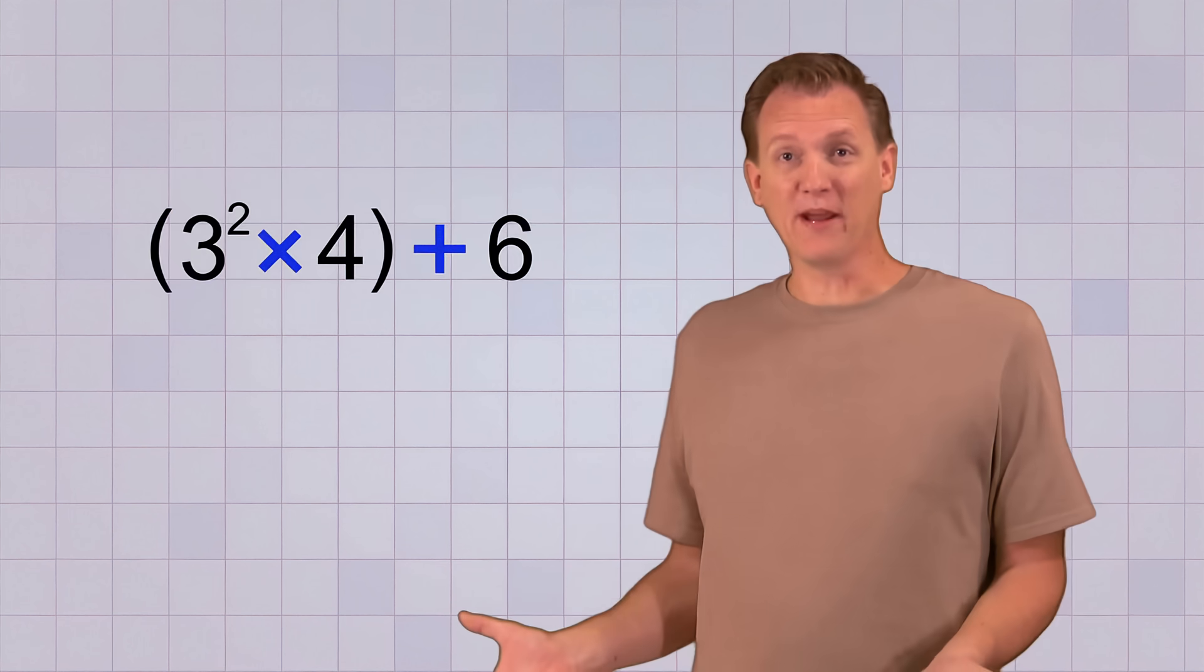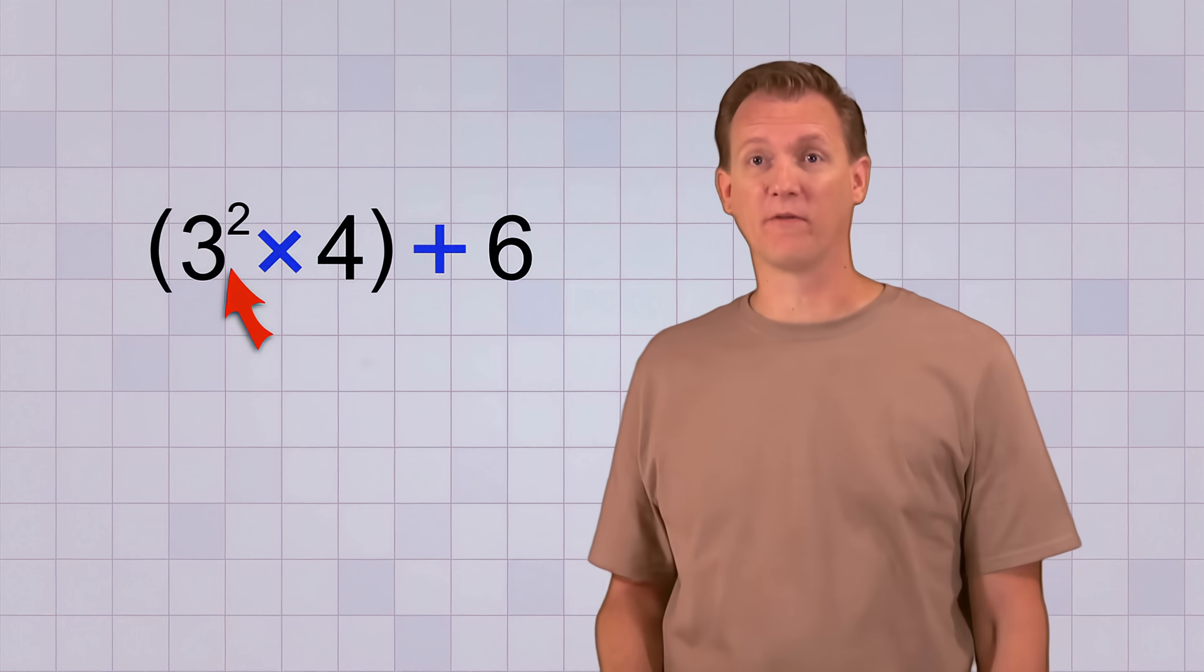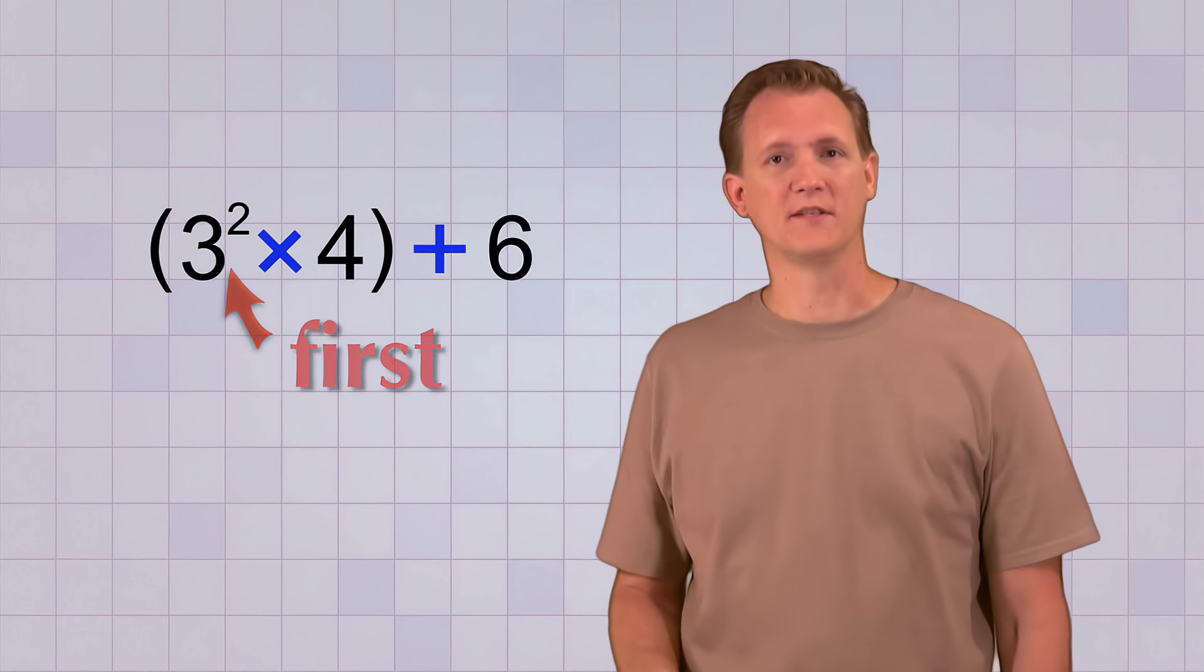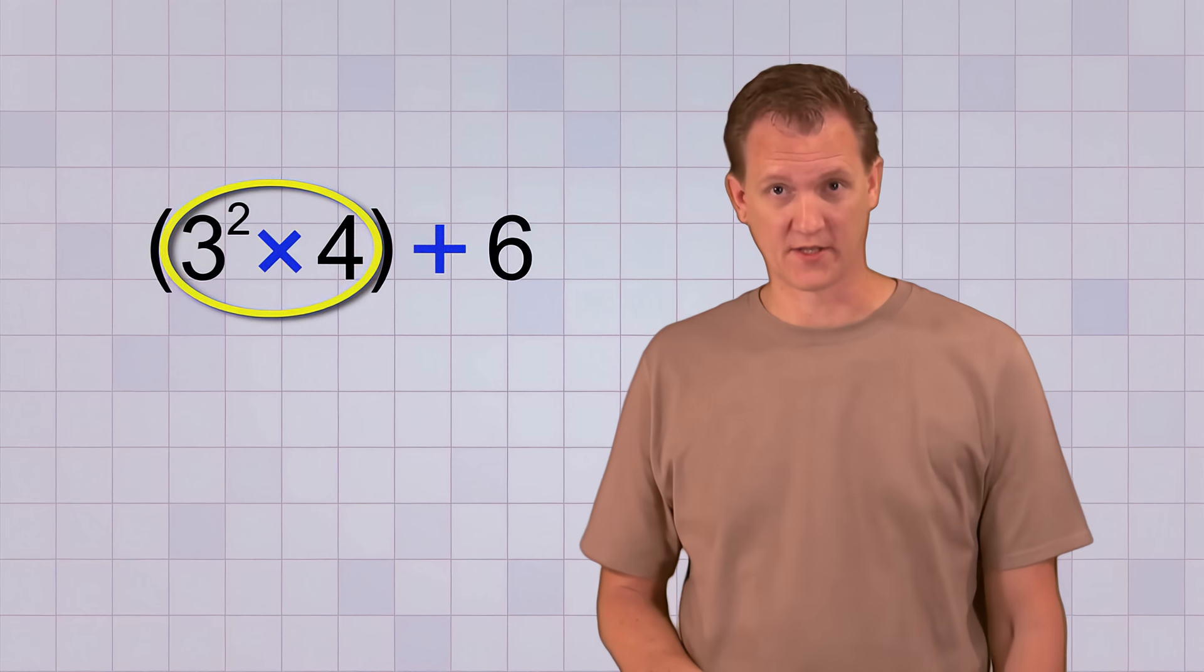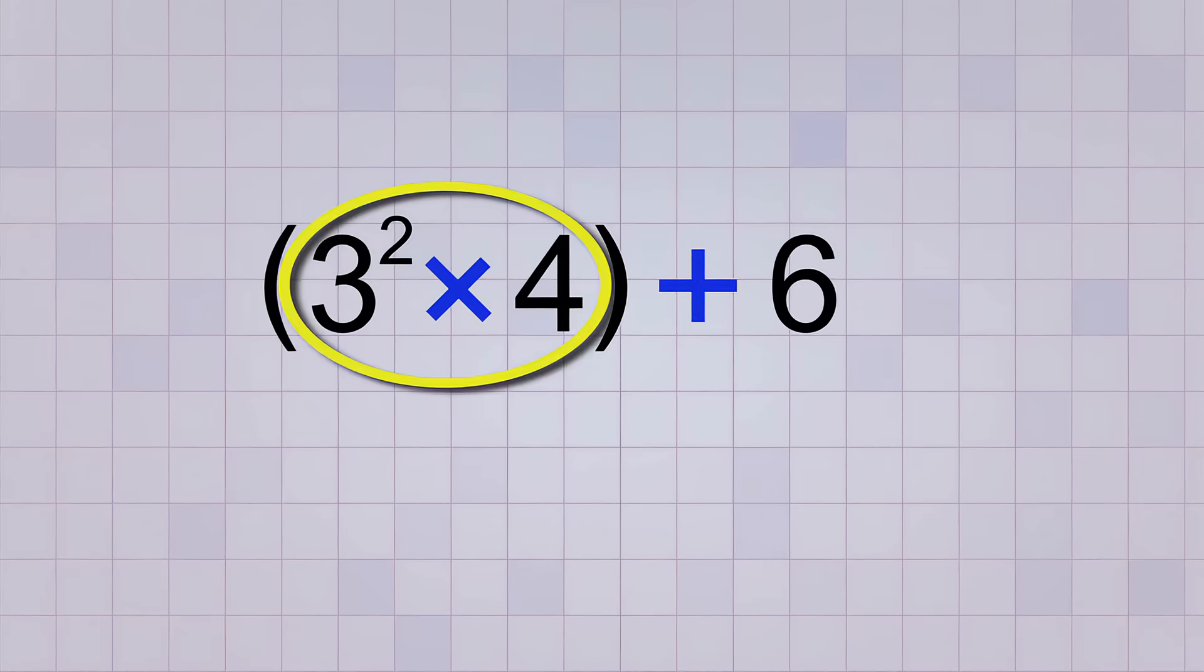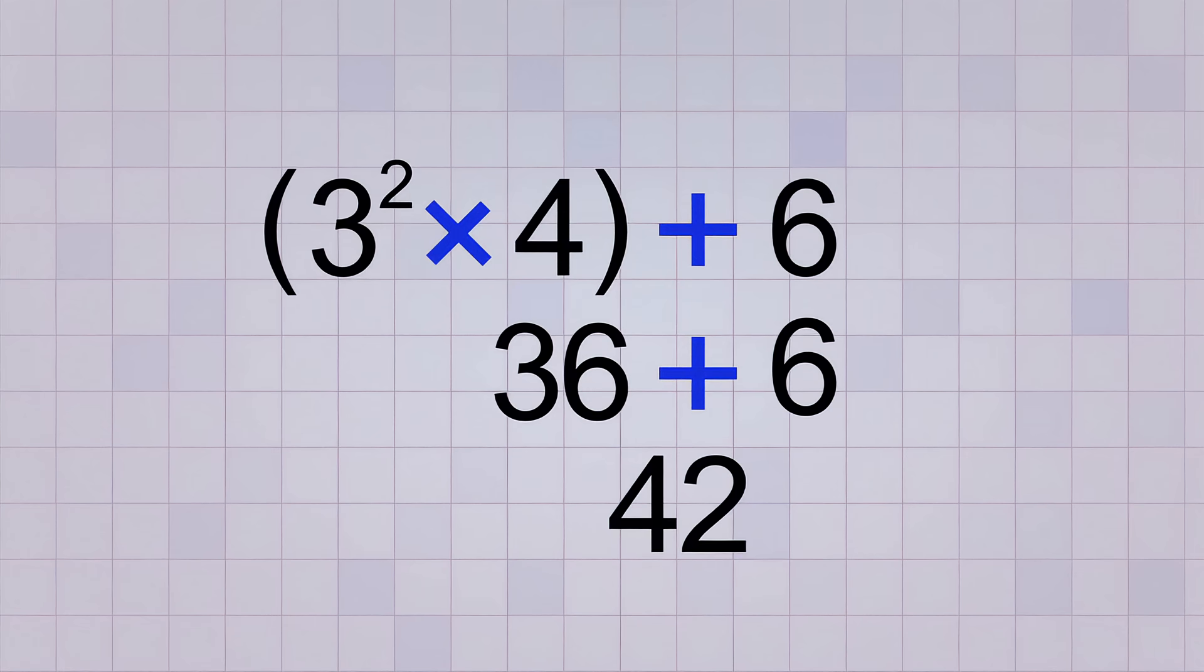Oh, and one thing I should point out. Sometimes you'll get a problem that has exponents inside of parentheses, like this problem. And you may wonder, how can I get rid of the parentheses before I do the exponents? You might think that if you simplify the exponent first, you're breaking the rules. But the truth is that by doing whatever operations are inside the parentheses, you are doing the parentheses first. The parentheses really just tell you where to start. So in this problem, first we do 3 to the power of 2, which means 3 times 3, which is 9. Then the part inside the parentheses is 9 times 4, which equals 36. And once the parentheses are gone, we add 36 plus 6 and get 42 as our final answer.